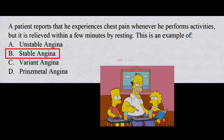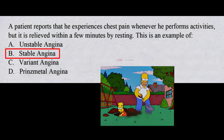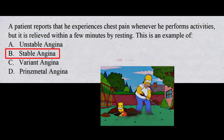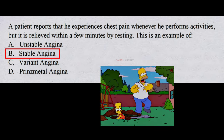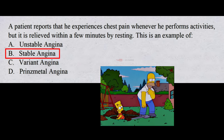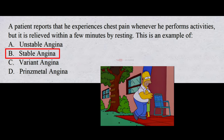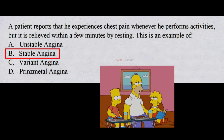Stable angina is the most common type of chest pain. It happens when the heart is working harder than usual. Stable angina has a regular pattern. Rest and medicine usually decrease the chest pain.